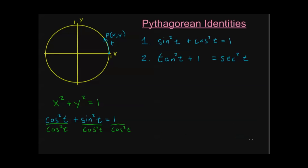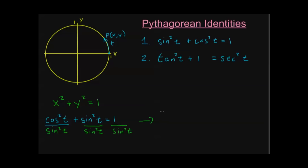We have one more. We're going to find this third one in almost exactly the way we found the second one. Only now, instead of dividing through by cosine squared, I'm going to divide through by sine squared. Dividing both sides through by sine squared, I get cosine squared over sine squared — that's the same thing as cosine over sine, the entire quantity squared. Sine squared over sine squared is just 1.